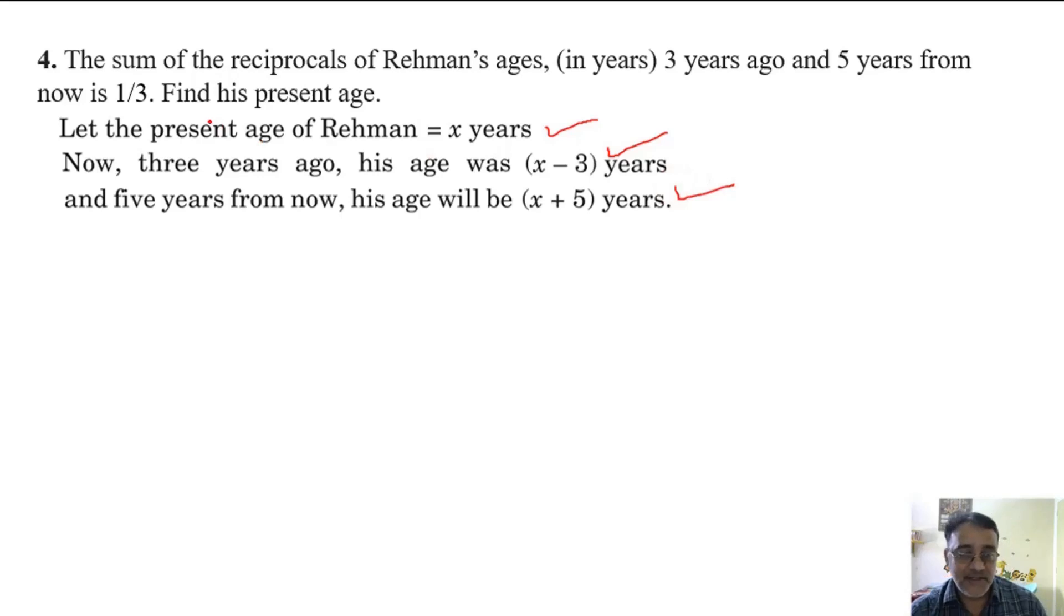Now according to the question, the sum of the reciprocal of these two is 1 by 3. So we will write according to the question, 1 upon x minus 3 plus 1 upon x plus 5 equals 1 by 3.